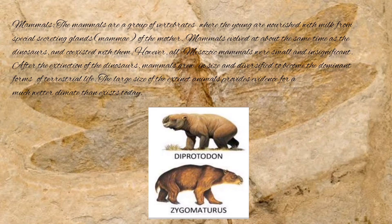Mammals are a group of vertebrates whose young are nourished by milk from the special secreting glands of the mother. Mammals evolved at about the same time as the dinosaurs and co-existed with them. However, all Mesozoic mammals were small and insignificant. After the extinction of the dinosaurs, mammals grew in size and diversified to become the dominant forms of life. The large size of extinct mammals provides evidence for a much wetter climate than exists today.